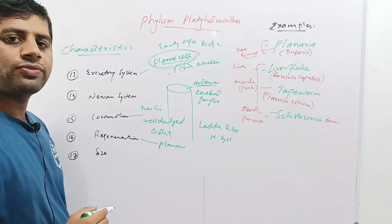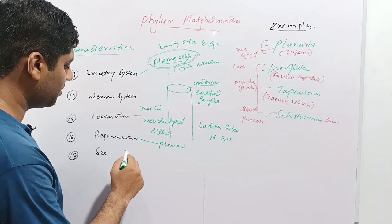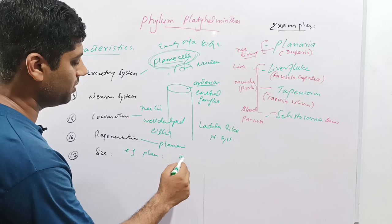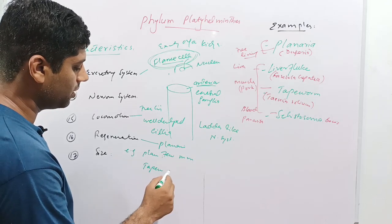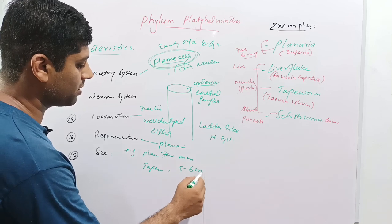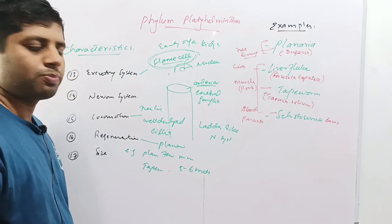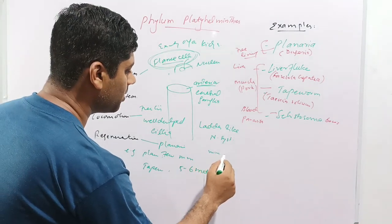The members of this phylum have variable size. For example, the size of planaria is a few millimeters, while the size of tapeworm is up to 5 to 6 meters. So the size of Platyhelminthes ranges from millimeters up to meters.